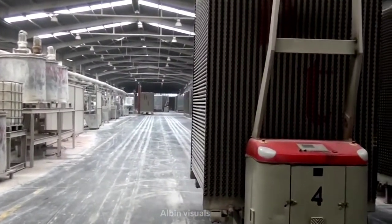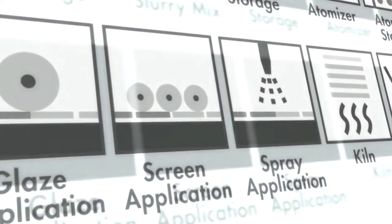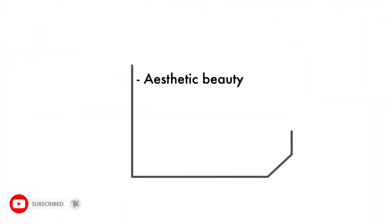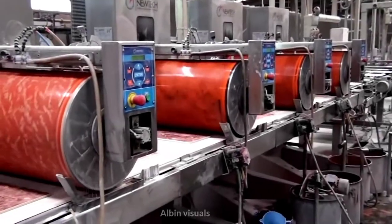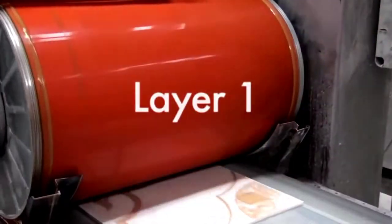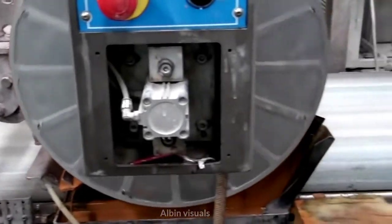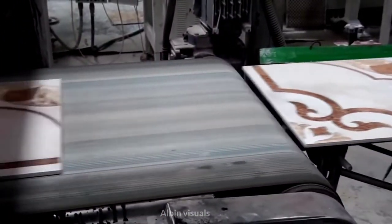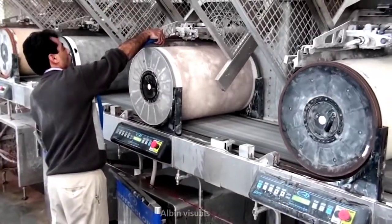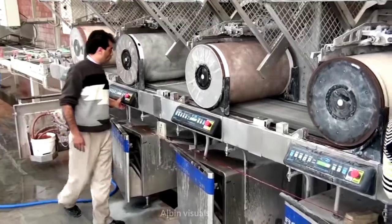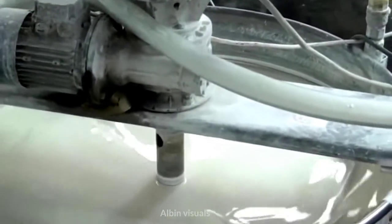We have to prepare a product for the machine. This is the process for the spray application. The 3 layers are printed. This is the process of using a glaze application. We are using the glaze application — it is not chemical. This is the option for the tile.